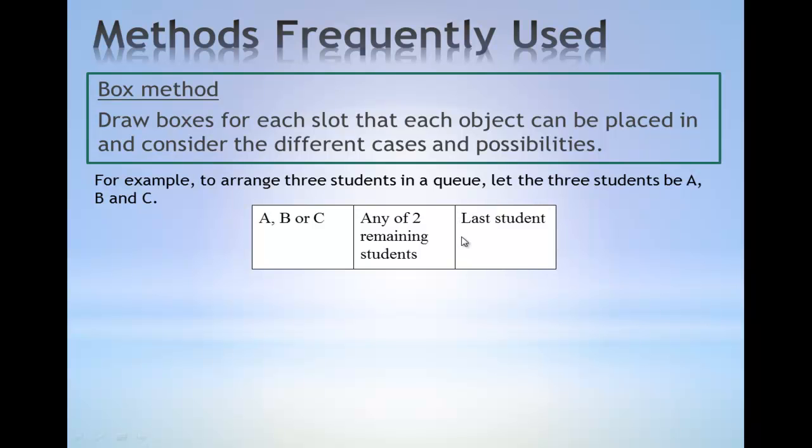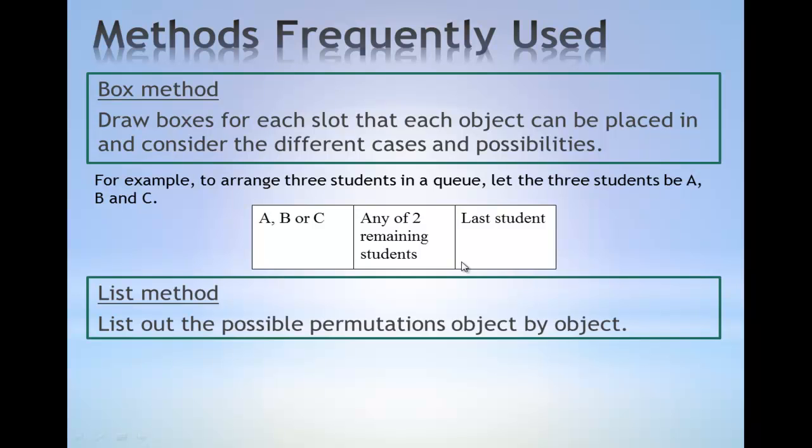The second method that is frequently used is the list method. This is to list out all possible permutations object by object. Using back the previous example, one way to arrange three students in the queue is to have A in the first position followed by either B or C or C then followed by B.